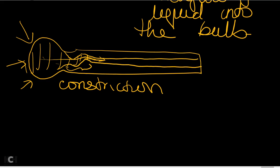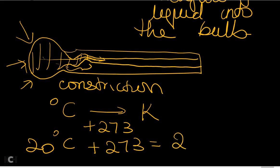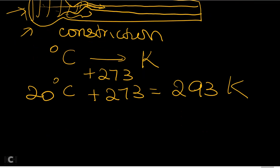All these thermometers measure temperature in degrees Celsius. To convert from Celsius to Kelvin, add 273. For example, 20°C + 273 = 293 K. To go from Kelvin back to Celsius, subtract 273, so 293 K − 273 = 20°C.